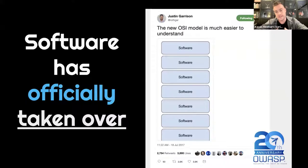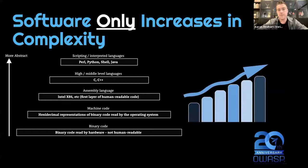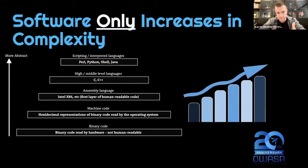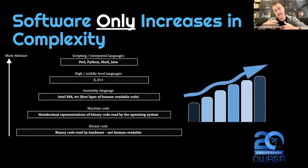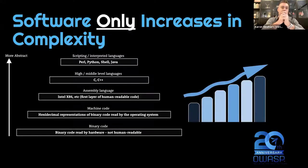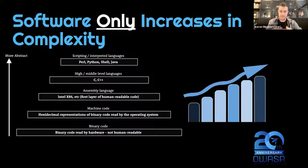The new OSI model is essentially software — pretty much layer two and above is all software now. The problem is it only ever increases complexity. If you have a complex software system and want to make it simple, there's a relationship between changing something and making it more complex. The more you change, the more complexity you add. If you wanted to simplify a complex system, you have to change it — so you're not actually simplifying, you're just moving complexity around. Chaos engineering is about navigating the complexity, not trying to simplify it.